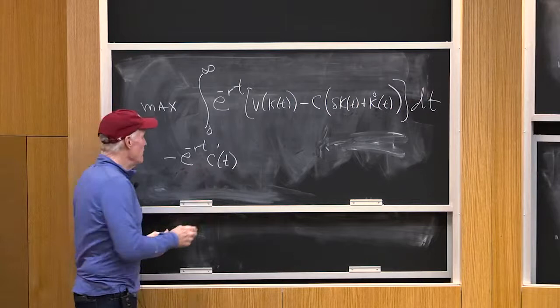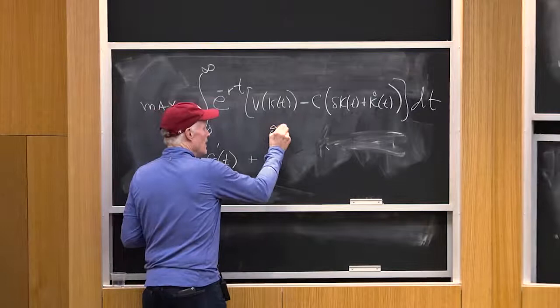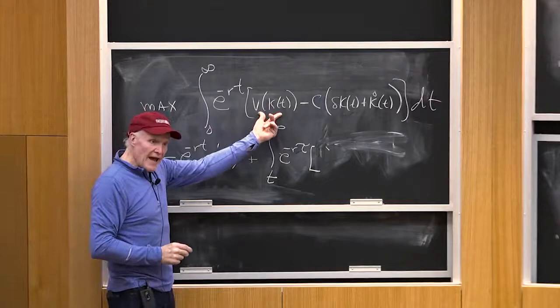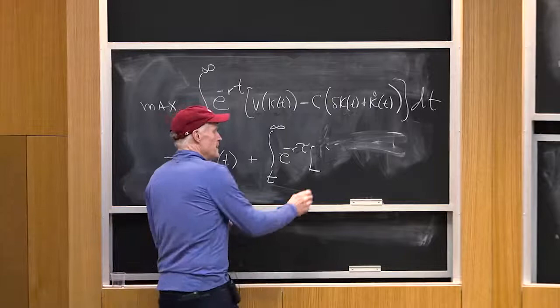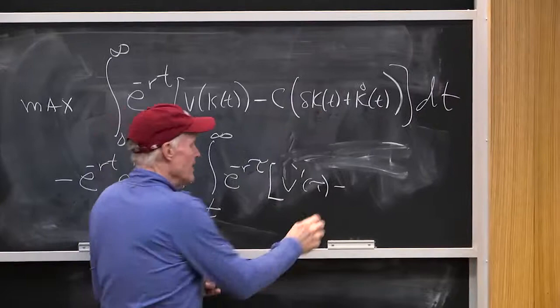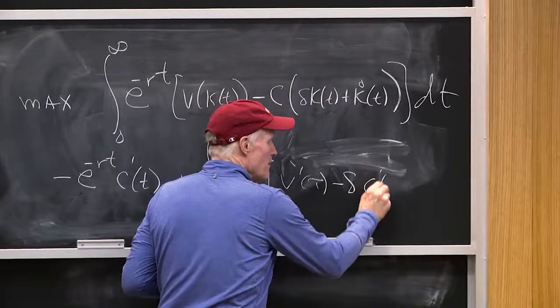But then what am I going to get from then on? From date t forward, I'm going to get e to the minus r tau. And what am I going to get? Well, I'm going to have extra k. I'm going to have, if I did one more unit of k dot, I'm going to have one more unit of k. So I'm going to get a v prime at tau minus, I'm going to have another unit of k, delta c prime of tau d tau.